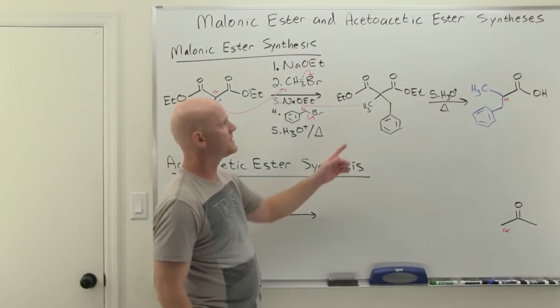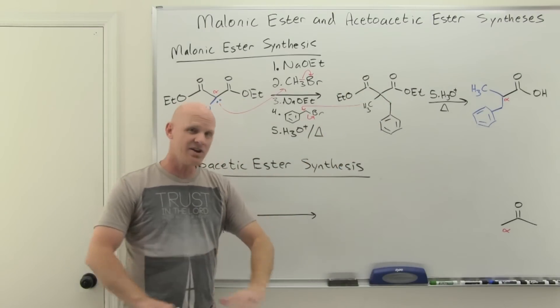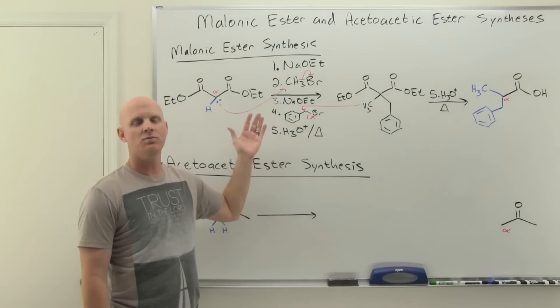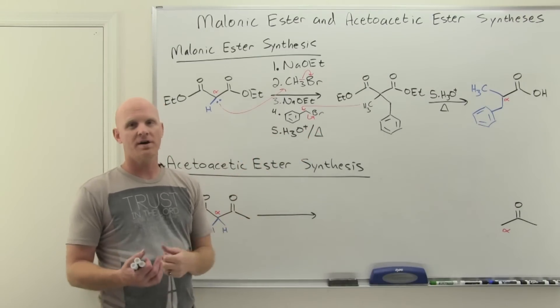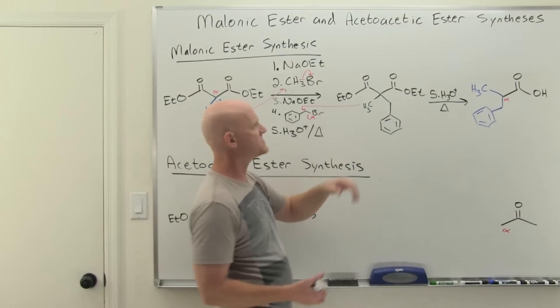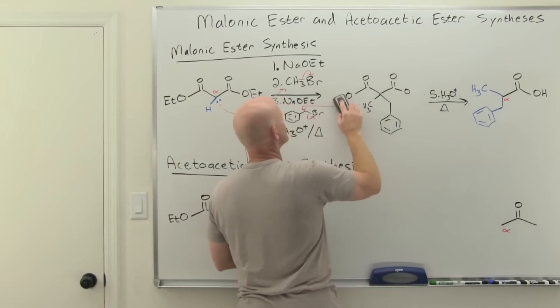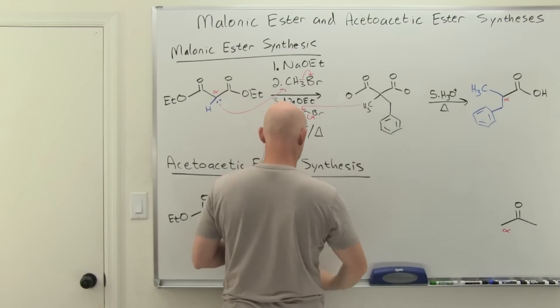If we look here, we learned that esters, just like any carboxylic acid derivative, when you add H3O plus and especially H3O plus with heat, even more so, they all turn into carboxylic acids. And so the first thing that H3O plus is going to do here is hydrolyze both esters to carboxylic acids. So let's start there.